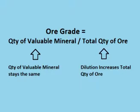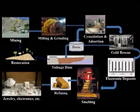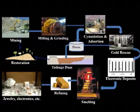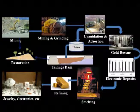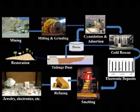This dilutes the ratio of valuable materials versus total material, which lowers the stated ore grade. Losses occur during mining and processing. Mining is not a perfect process. Some of the valuable mineral is left behind and some is lost during processing. The reported quantity of minerals in reserves has an allowance for losses already subtracted off of the total.